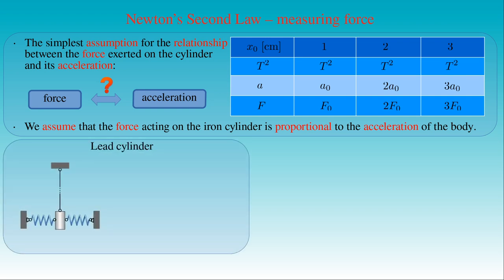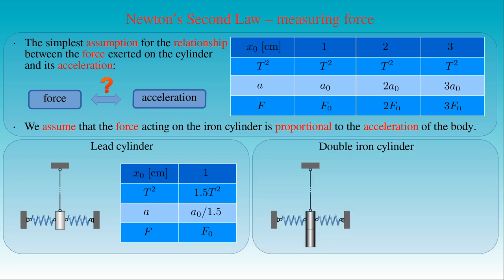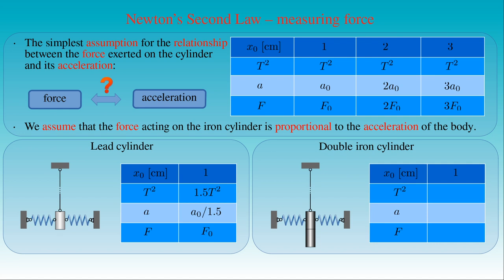Now we replace the iron cylinder with a lead cylinder of the same size, and measure the period T of the oscillating body with maximum amplitude of 1 cm. In this case, the force acting on the lead cylinder is still equal to F0, but we find that T² is 1.5 times greater than the one measured for the iron cylinder. Then the acceleration of the lead cylinder at maximum amplitude is equal to A0 divided by 1.5, or two-thirds of the acceleration measured for the iron cylinder. We then use the iron cylinder again but attach another iron cylinder of the same size to it. The force on the cylinders is still F0, but T² is two times greater; as a result, the acceleration of the double iron cylinder is half of that measured for the single one.